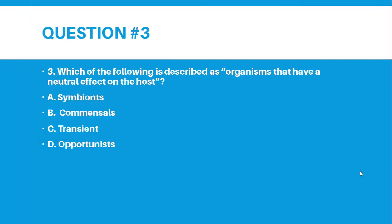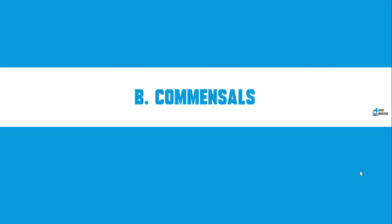Number 3. Which of the following is described as organisms that have a neutral effect on the host? Letter A, Symbionts. Letter B, Commensals. Letter C, Transient. Letter D, Opportunists. And the correct answer for number 3 is letter B, Commensals.